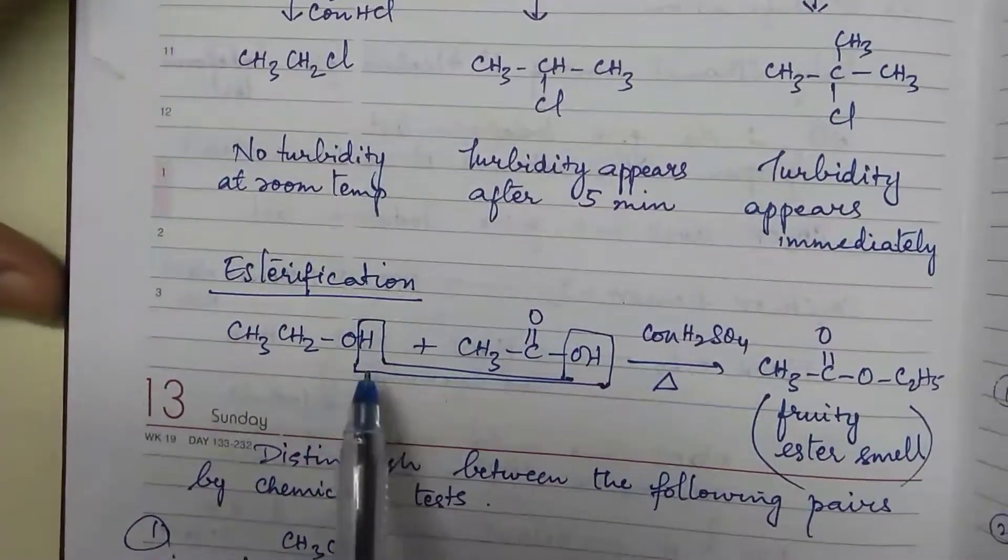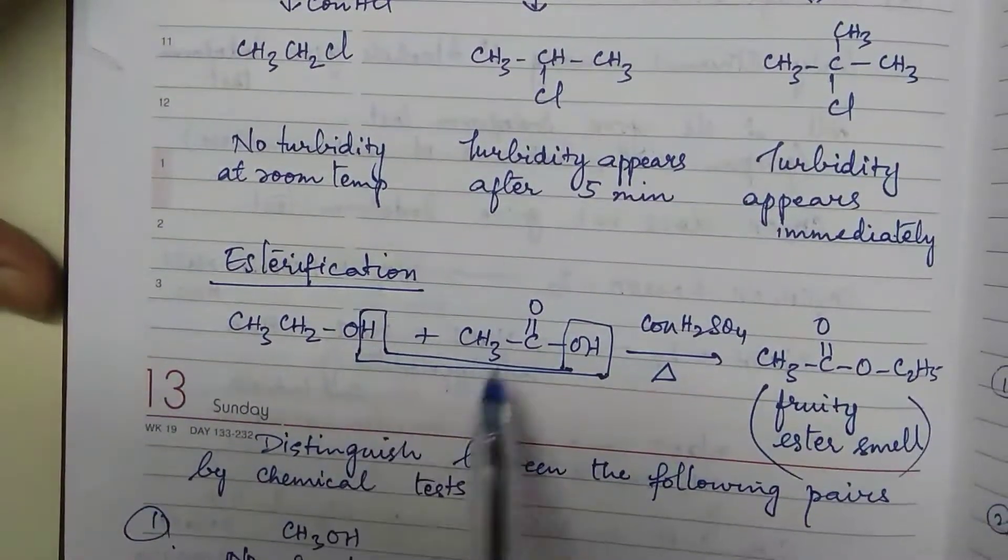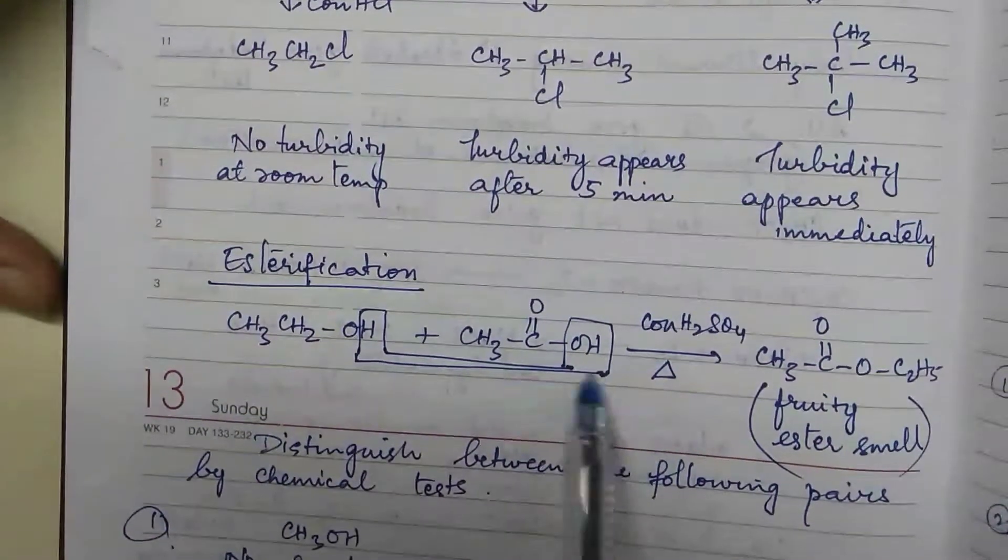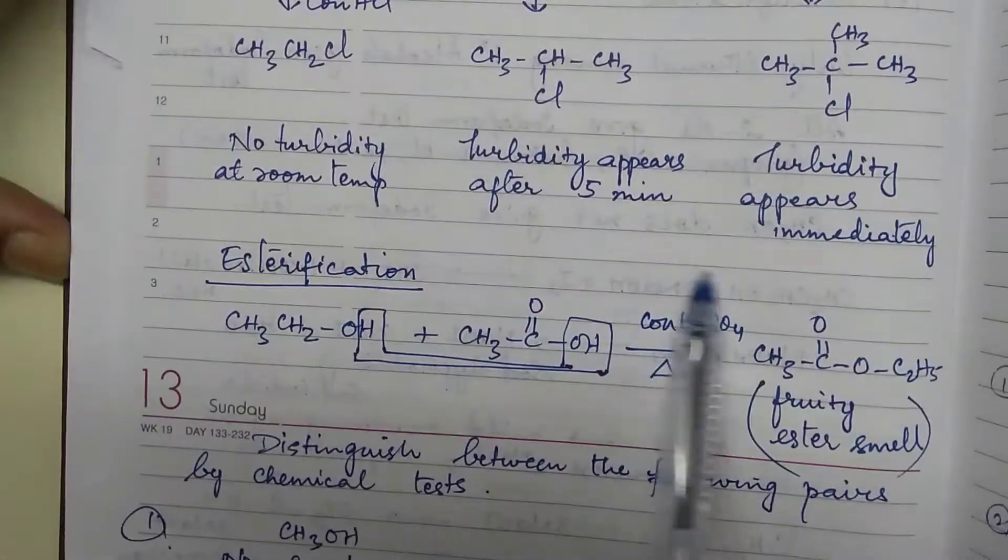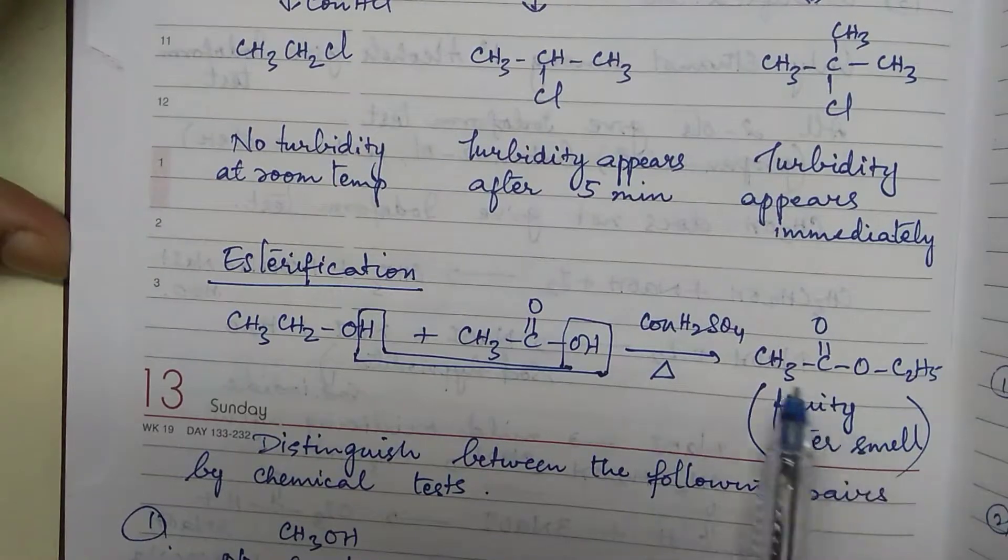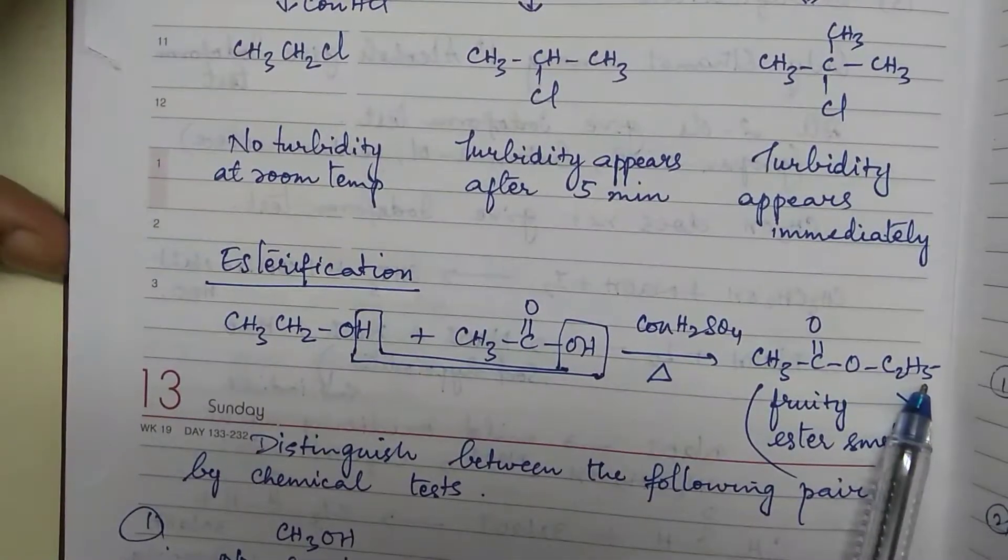Now how this ester is formed? See alcohol, may say hydrogen and acid, may say OH. These two get out in the form of water. This is a dehydrating agent. It will remove water and what you get is an ester. How is that ester formed?